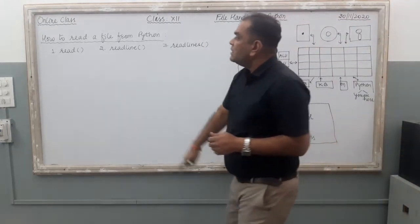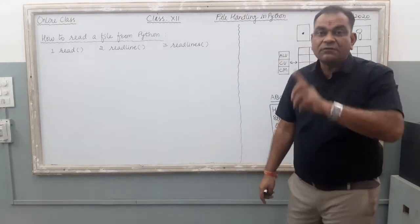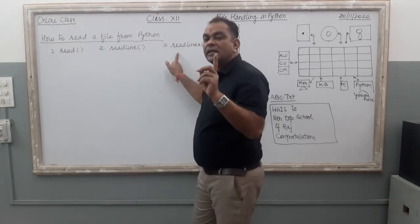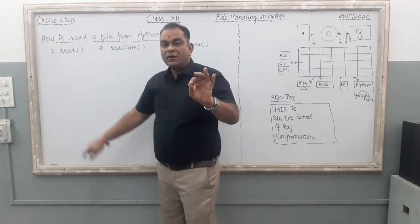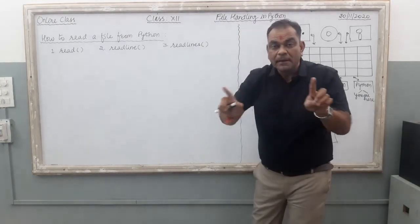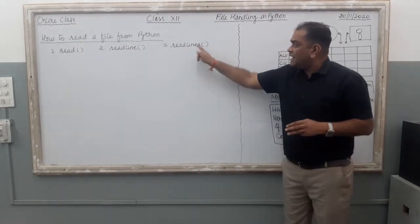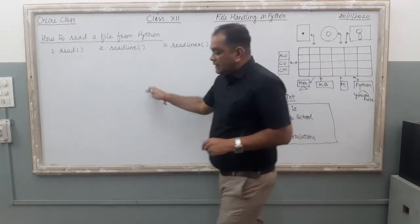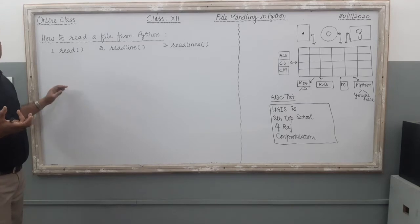First, we are going to discuss the read process, then cover how to write program data into the text file. If you want to read the contents of a text file, there are three different functions in Python: the first one is the `read` function (written in small letters), the second is `readline` (a single word, no space), and the third is `readlines` (plural term).